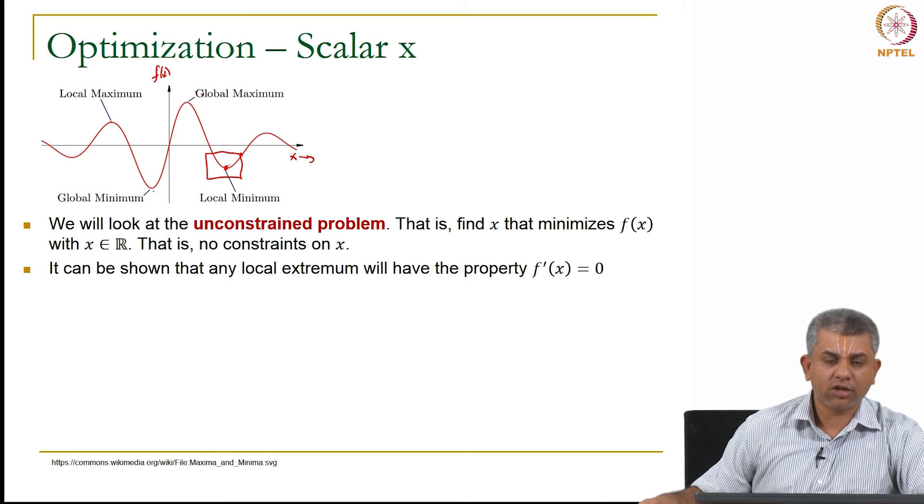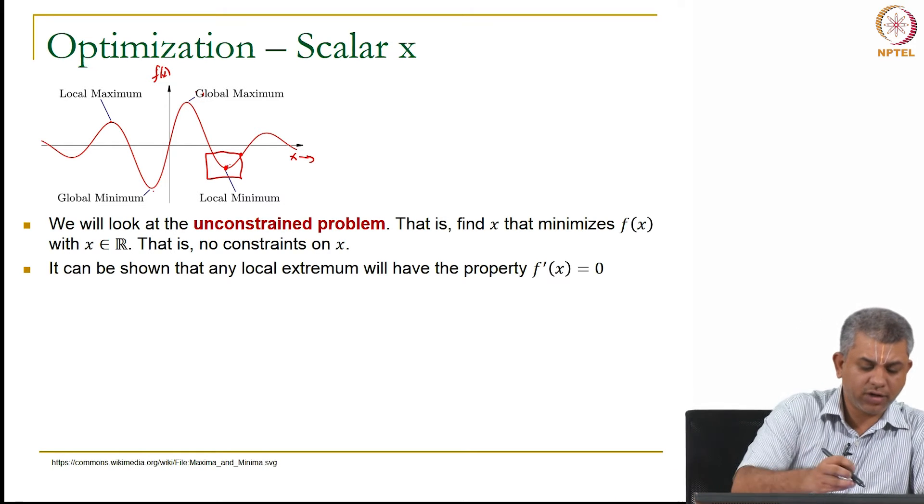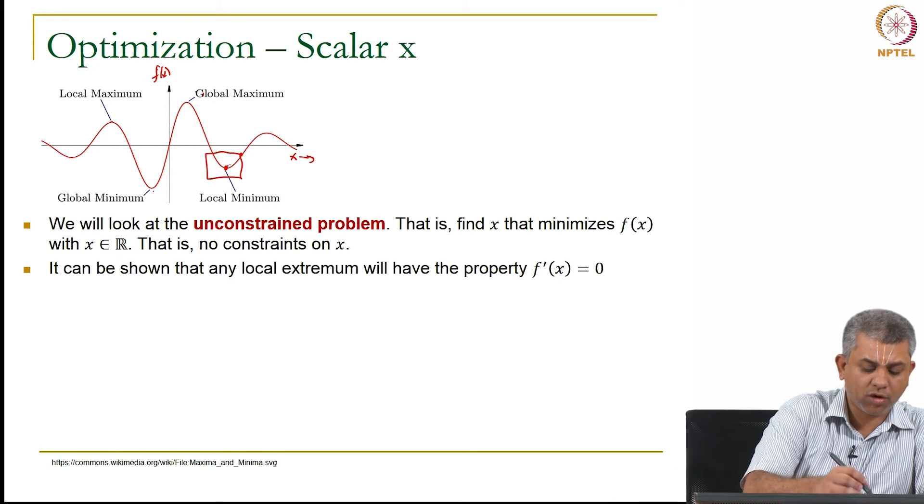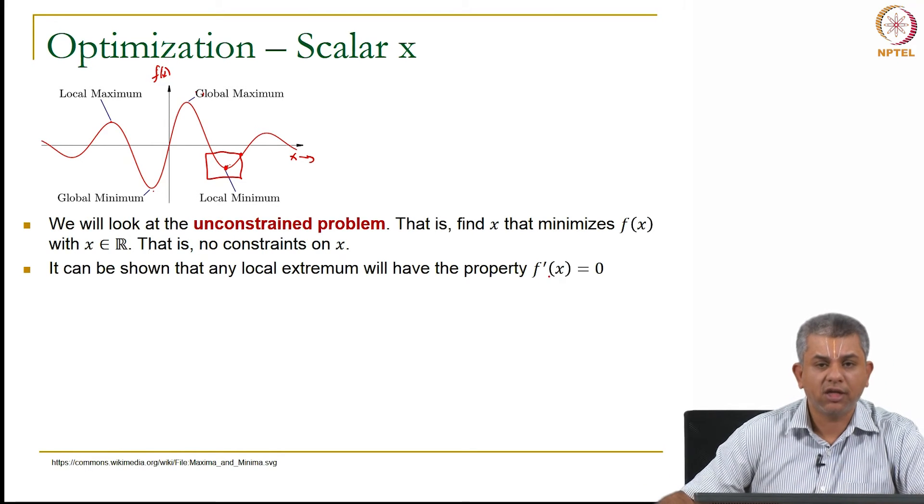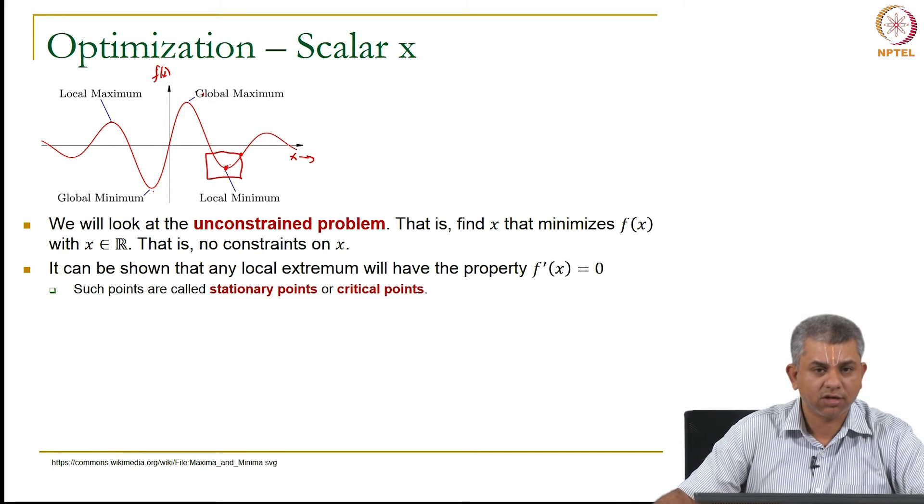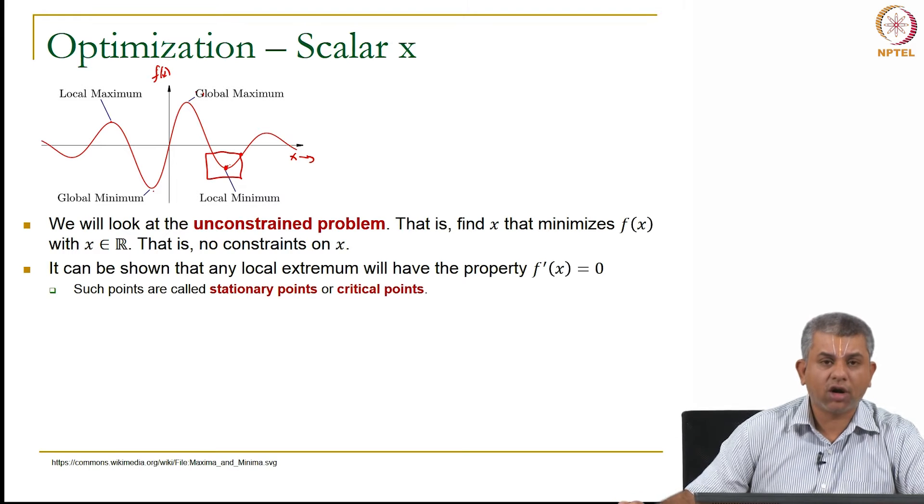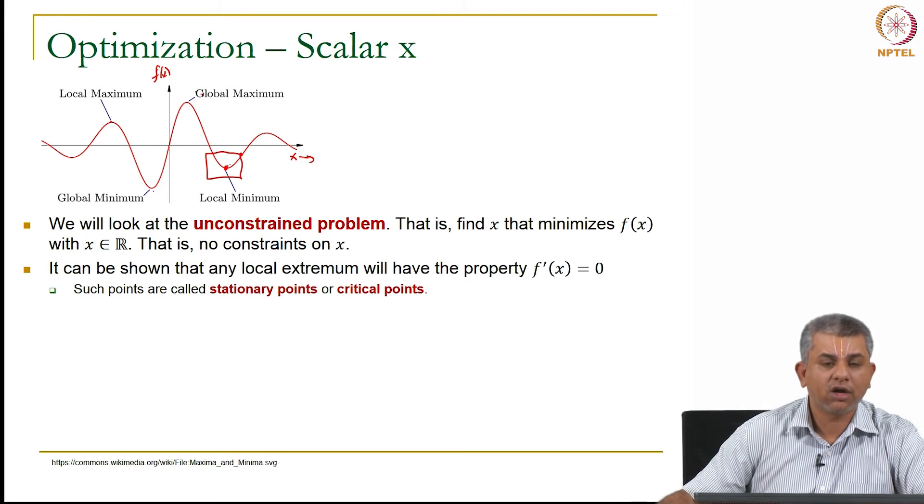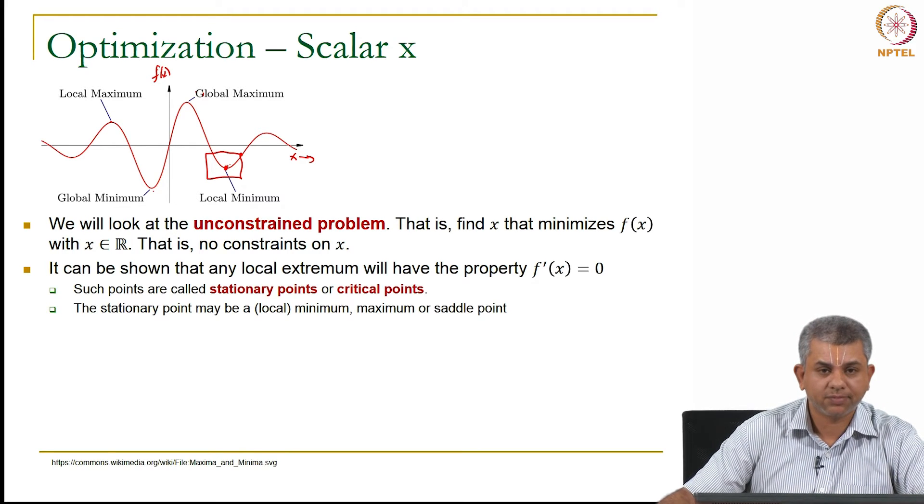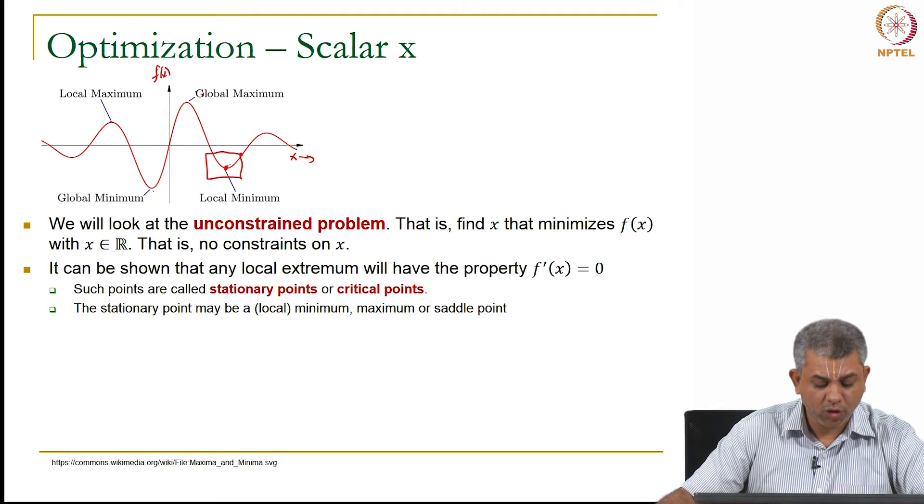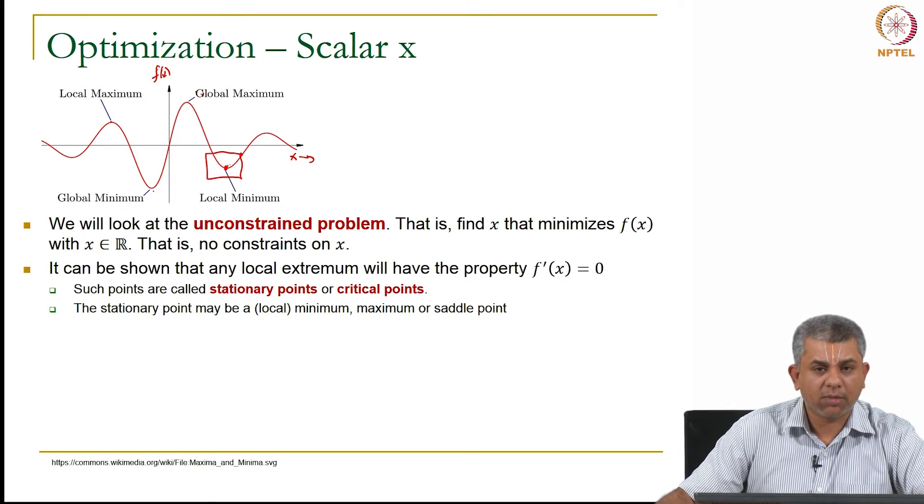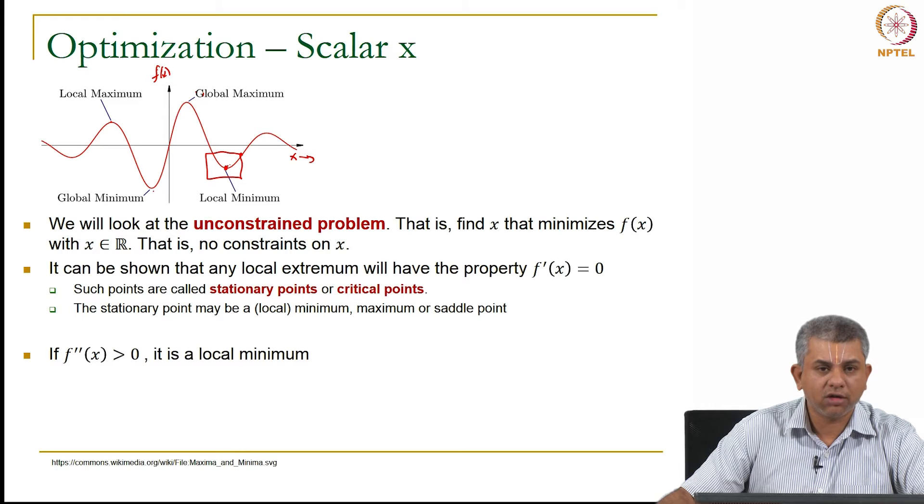Now it can be shown that both these extrema, we are not going to show it, but both these extrema whether it is local minimum or local maximum, all of them will have the property that f prime x equal to 0 in the unconstrained case. So these points are called stationary points or critical points. So the stationary point as I have just shown could be a local minimum or a local maximum or something called a saddle point.